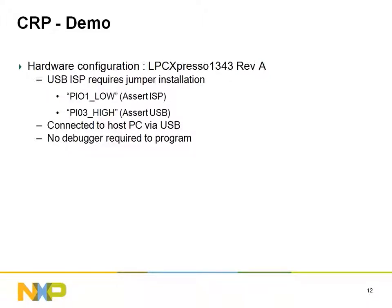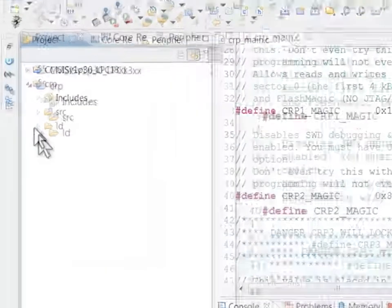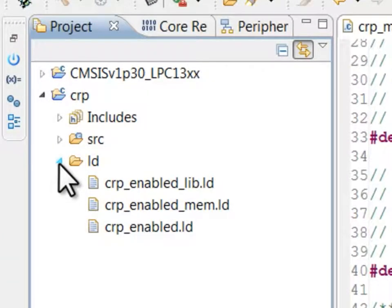To enable this mode to power on, I've installed the default jumpers on the LPC Expresso baseboard, and I will assert the ISP pin via the bootloader enable push button. Remember that when using USB-based in-system programming, you must ensure that your binary images contain a proper CRC. I've done this using post-build actions inside of LPC Expresso, which I will detail later. Notice that this CRP example makes use of custom linker scripts.